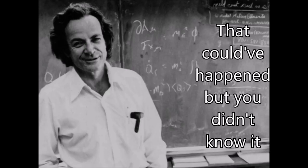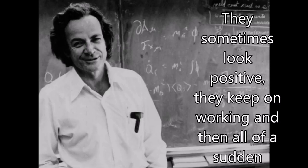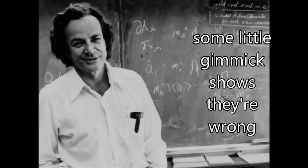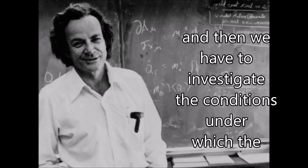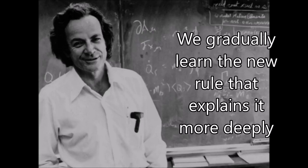That can happen, but you didn't know it. And so it's very analogous to the way our laws are. They sometimes look positive, they keep on working, and all of a sudden some little gimmick shows that they're wrong. And then we have to investigate the conditions under which this bishop change of color happened and gradually learn the new rule that explains it more deeply.